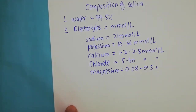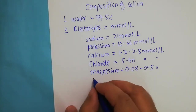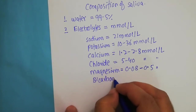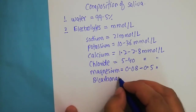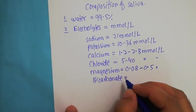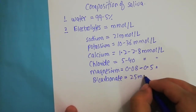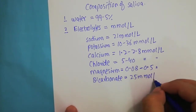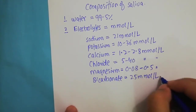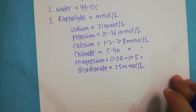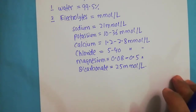Another important electrolyte is magnesium, usually 0.08 to 0.5 millimoles per litre. Another important component is the bicarbonates, with a concentration in the saliva of usually 25 millimoles per litre, and many more. These are just some of the important electrolytes present in the saliva.